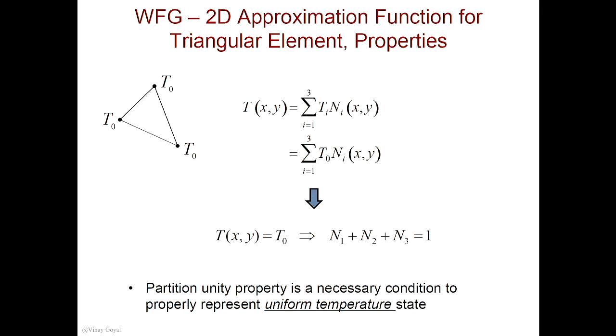Before we apply weak form Galerkin, we need to come up with a suitable approximation function for temperature — and we're making them so they have physical meaning. Now my basis functions turned out to have actual meaning as well. They're the shape functions, and the shape functions now have additional properties: Kronecker delta property, partition of unity, conforming interpolation — meaning it allows you to represent temperatures that are continuous across element boundaries.